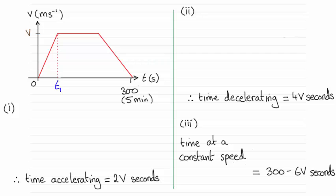What I know is that if I look at the gradient here, remember the gradient gives us acceleration. We've got that height divided by this distance here gives us that gradient, so in other words V divided by t.